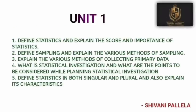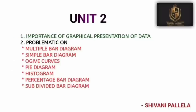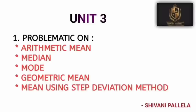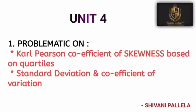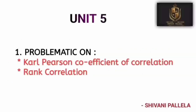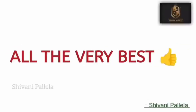Now for the long questions: Unit 1 is completely theory — a question related to statistics is compulsory, whether it is importance, scope, or any aspect of statistics. Unit 2 is a simple unit based on problematic concepts like diagrams — ogive curve, histogram, and simple bar diagram. From Unit 3, learn arithmetic mean, median, and mode, which you can use as a choice. Unit 4: Karl Pearson's coefficient of skewness and Bowley's skewness — learn both topics. From Unit 5, rank correlation and Karl Pearson correlation are compulsory problematic concepts.